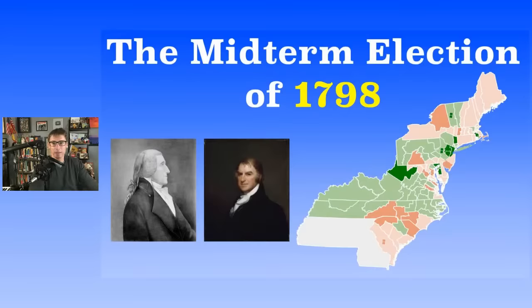Then we have the crazy presidential election of 1800 — the first truly nasty election that really divided the country between Thomas Jefferson and John Adams. Aaron Burr gets in there and ends up just being vice president, barely. It's crazy, but you all know about that.